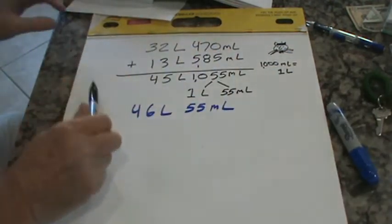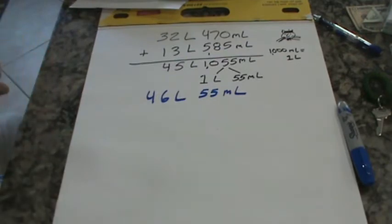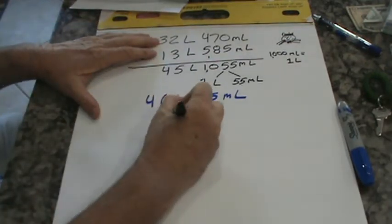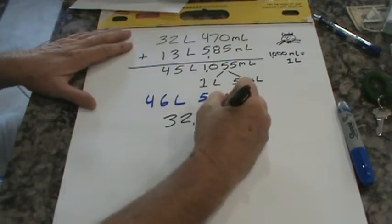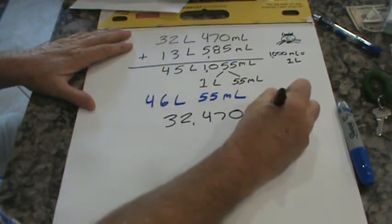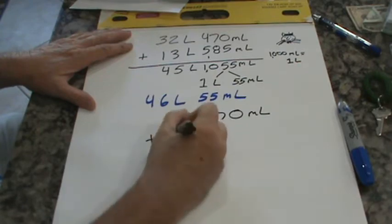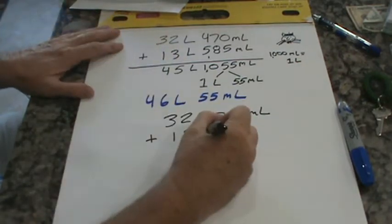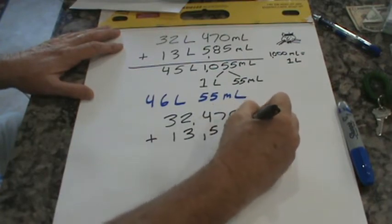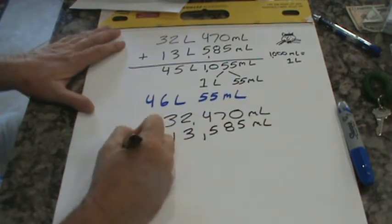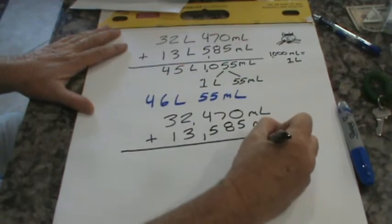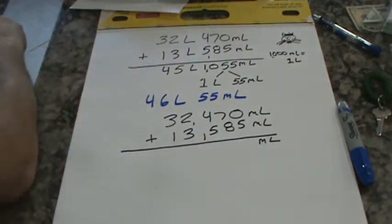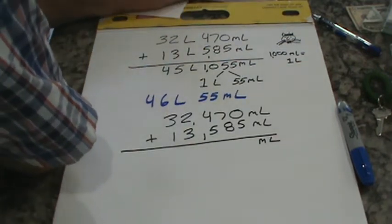Now, we could also convert them completely to milliliters. So let's go ahead and do that. So we have 32,000 milliliters in the 32 liters, 470 milliliters. And we're going to add on 13,000, right? 13 liters is 13,000 milliliters, 585 milliliters. And what I'm going to do is ask you to pause the recording and go ahead and add it up.